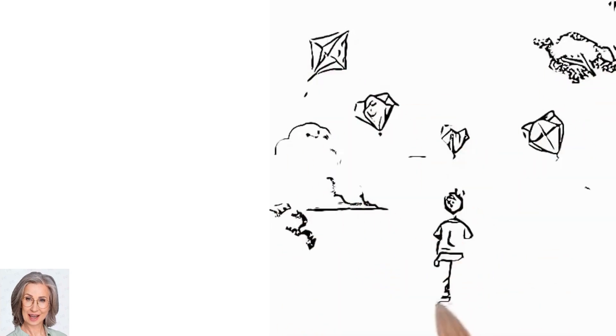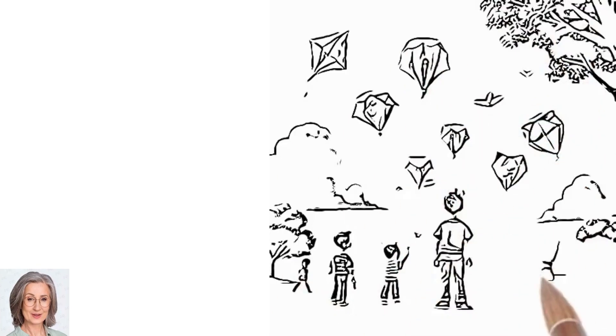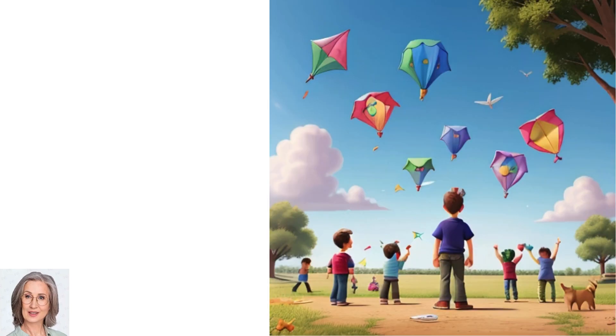One day, Billy was playing in the park when he saw a group of children flying kites. He watched in amazement as the kites danced and soared in the wind, and he realized that his dream might not be impossible after all.